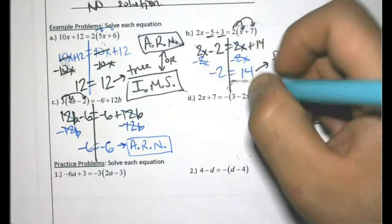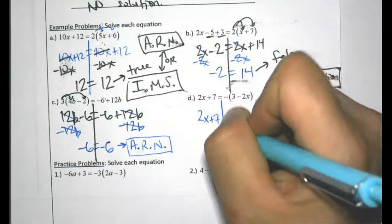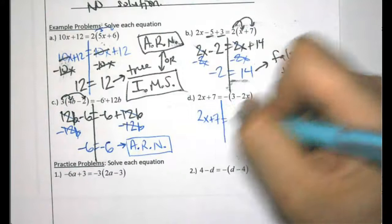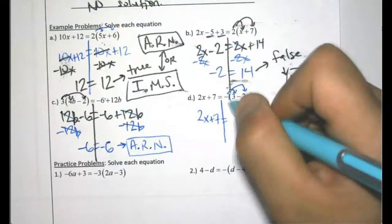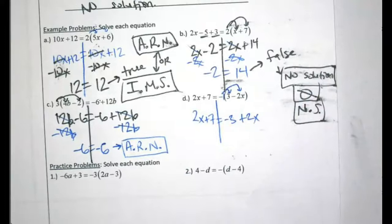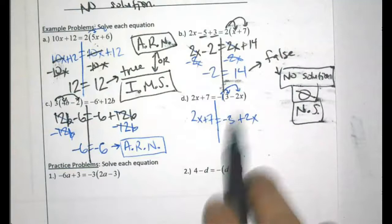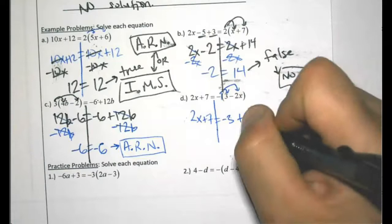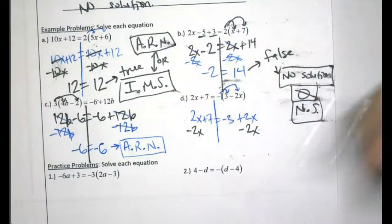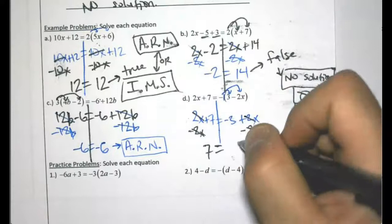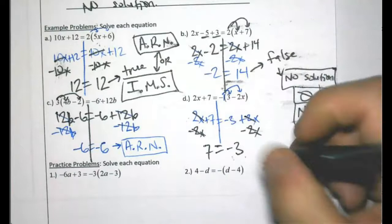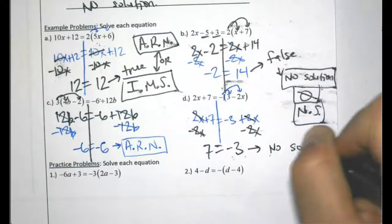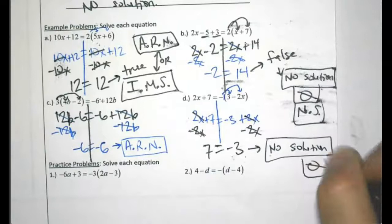This one: 2x plus 7 — I bring it down since there's nothing to do on the left. On the right I have to distribute the negative 1 — remember the negative sign is like a negative 1. Negative 1 times 3 is negative 3, negative 1 times negative 2x is plus 2x. I subtract 2x to move variables to the same side — the variables all zero out — and I'm left with 7 on the left and negative 3 on the right. Does 7 equal negative 3? No — that's false, so the answer is no solution.